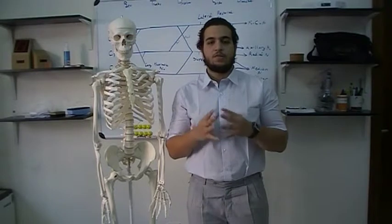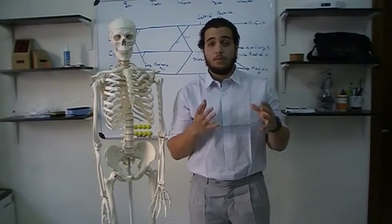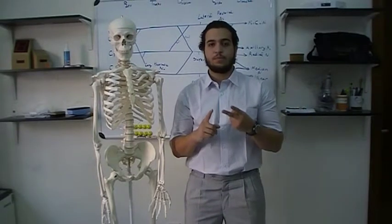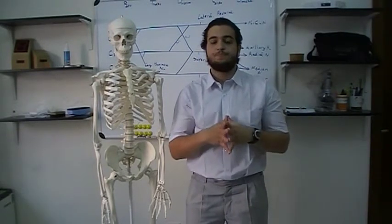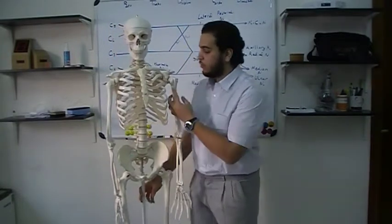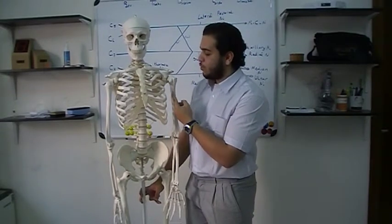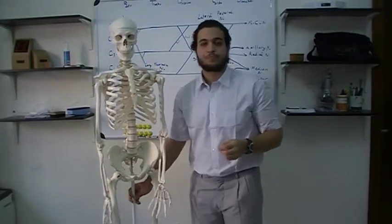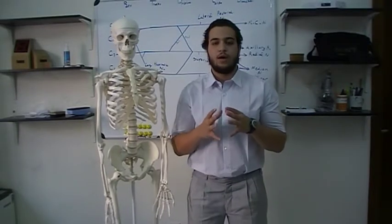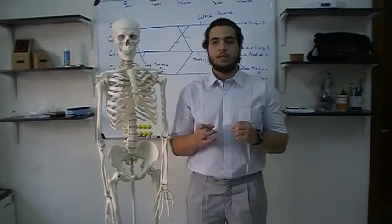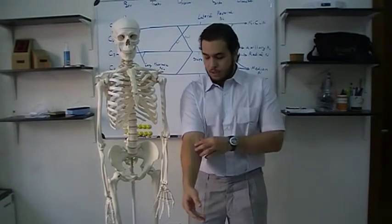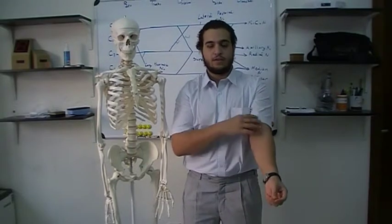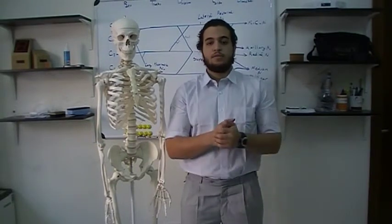The next muscle is the biceps brachii. Biceps is also a very well-known muscle. Biceps has two heads — one long head and one short head. 'Bi' means two. The long head goes through the intertubercle groove, and the short head attaches to the coracoid process. The biceps inserts into the bicipital aponeurosis, so we have a depression called the bicipital aponeurosis where the biceps attaches.